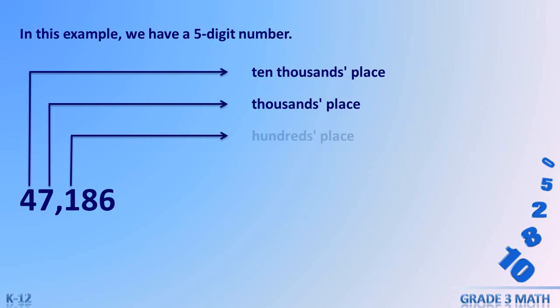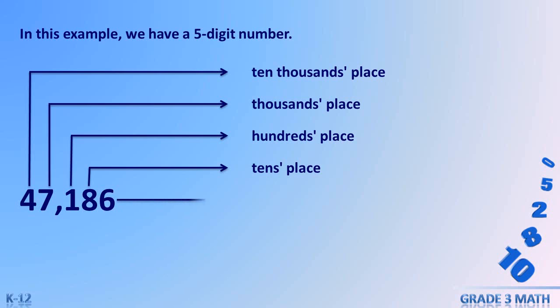The next digit is the hundreds place — it tells how many sets of 100 are in the number. In this number, we have one set of 100. Next is the tens place; we have eight sets of tens in this example. The last digit is the ones place, which is six.